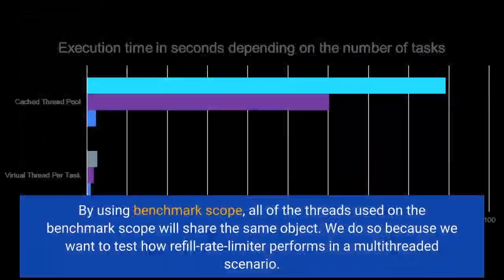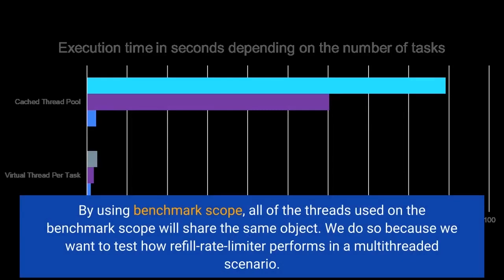By using benchmark scope, all of the threads used on the benchmark scope will share the same object. We do so because we want to test how Refill Rate Limiter performs in a multi-threaded scenario.